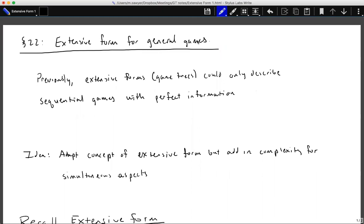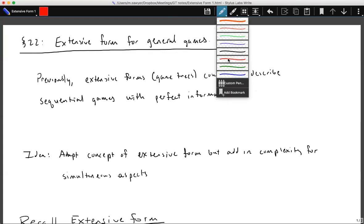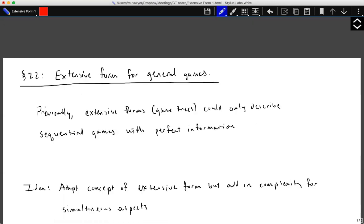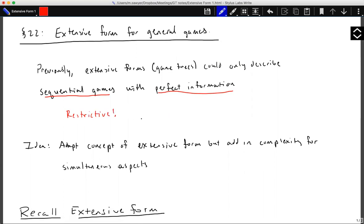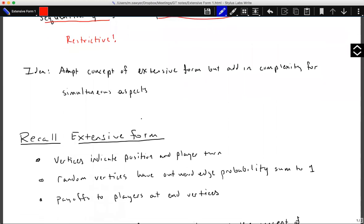So previously extensive forms or game trees could only describe sequential games with perfect information. And it's important to know that this idea of sequential games where players are taking turns and perfect information, being that players had to know the options that other players had, is a very restrictive sort of situation. So what we want to do is apply the concept of extensive form, but we want to allow a complexity for simultaneous aspects of games.